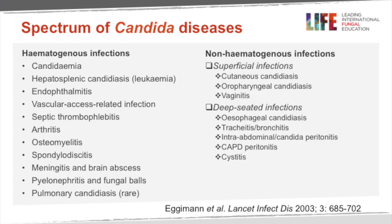The spectrum of Candida disease in human beings is very large. We usually see superficial infections caused by Candida, which is a colonizer of the gastrointestinal tract, the vagina, and the oral cavity. In specific populations such as patients with AIDS or immunodepression, you may have oropharyngeal candidiasis. You may also have vaginitis — it's a very common complication. Seventy percent of women will develop at least one episode of Candida vaginitis in their lifetime, and five percent may have relapse.